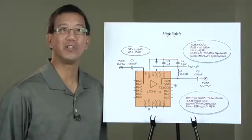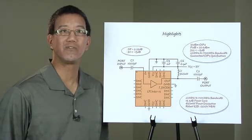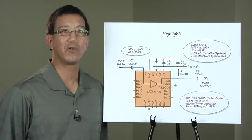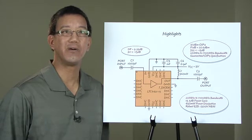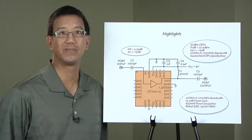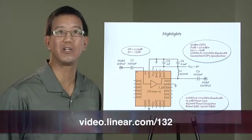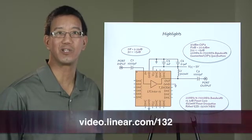I also want to let you know that the LTC6431-15 is only the first member of what will become a large family of products. Look for differential versions excellent for driving ADC converters and variants with different gains in the future. Visit us at linear.com to download an LTC6431-15 datasheet. Thank you for watching.